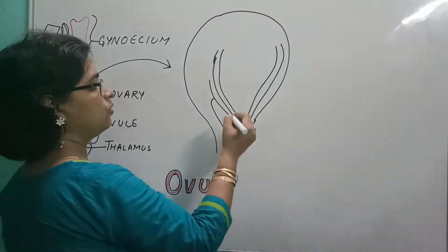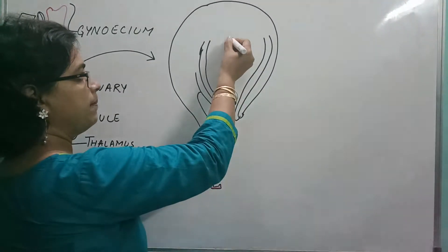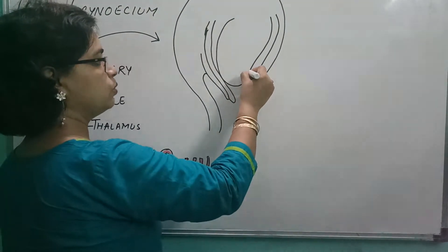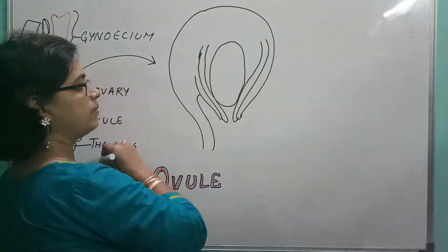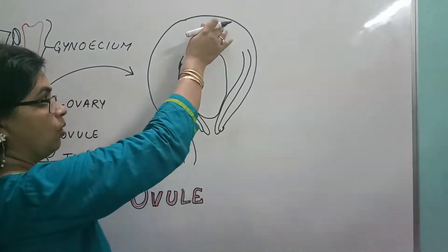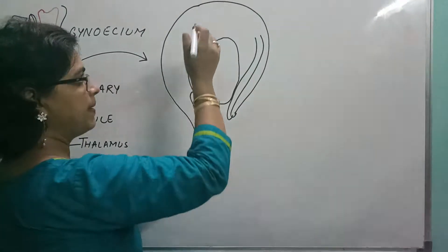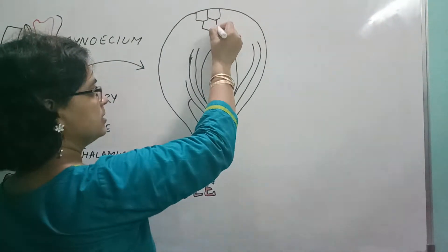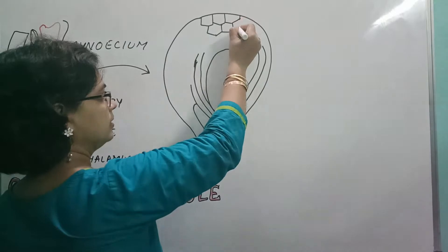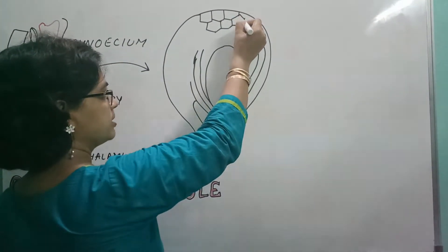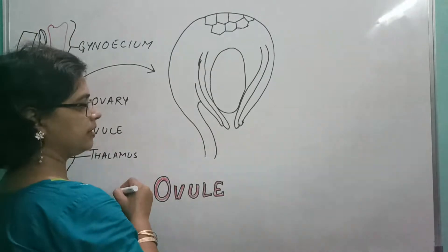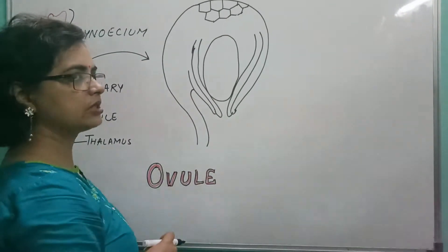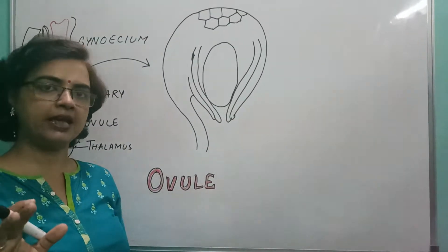Now inside the ovule, there is embryo sac. This embryo sac is present just towards the center part of this ovule. This is the embryo sac. The whole ovule is made up of simple parenchymatous cells. Simple parenchymatous cells filled with this. All these parenchymatous cells are present inside. The sac-like covering is to be termed as the embryo sac, and this embryo sac contains 7 cells and 8 nuclei.